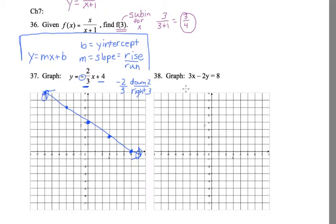Next problem, graph this line. The problem with this line is it's not in slope intercept form. It's not in y equals mx plus b. But we can solve for y to find that.